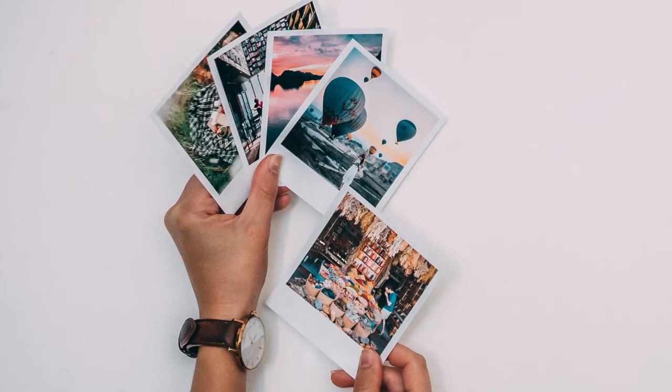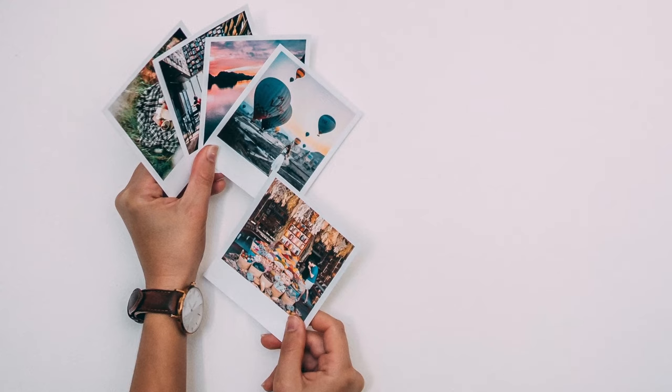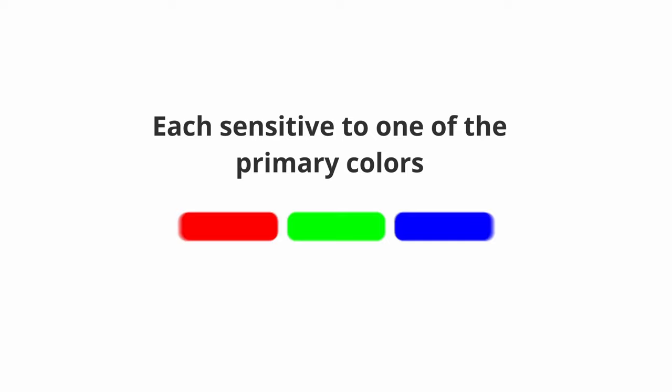Instant color film follows a similar process, but employs three layers of silver halide crystals, each sensitive to one of the primary colors — blue, green, and red. These layers produce their respective color negatives when exposed.